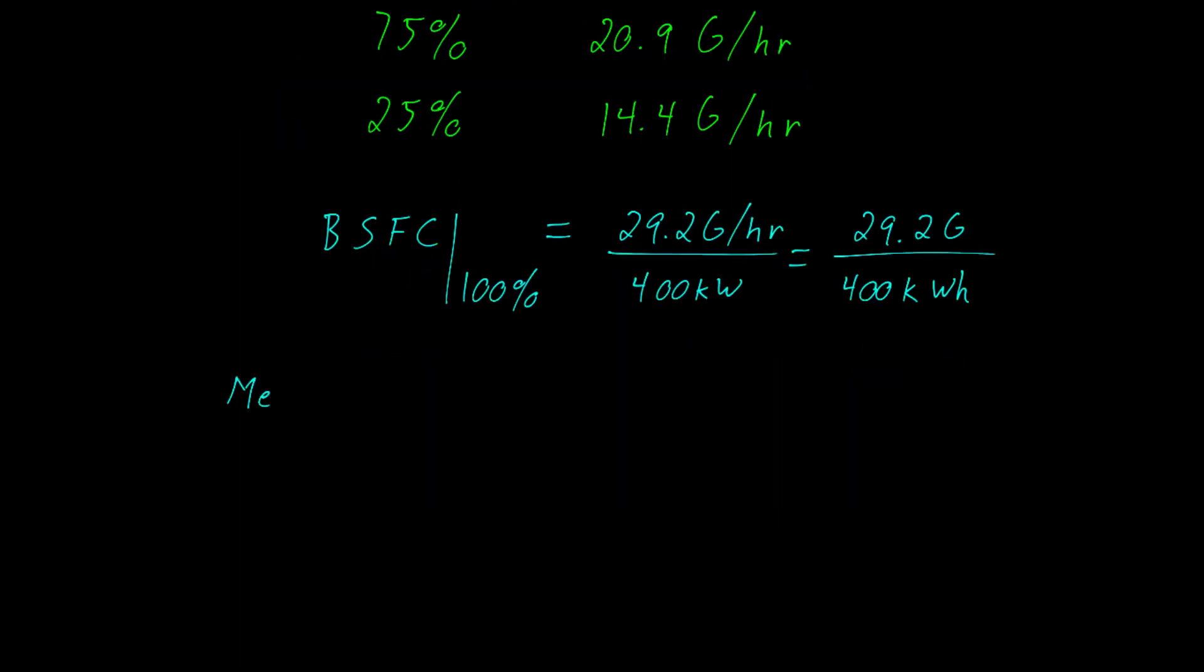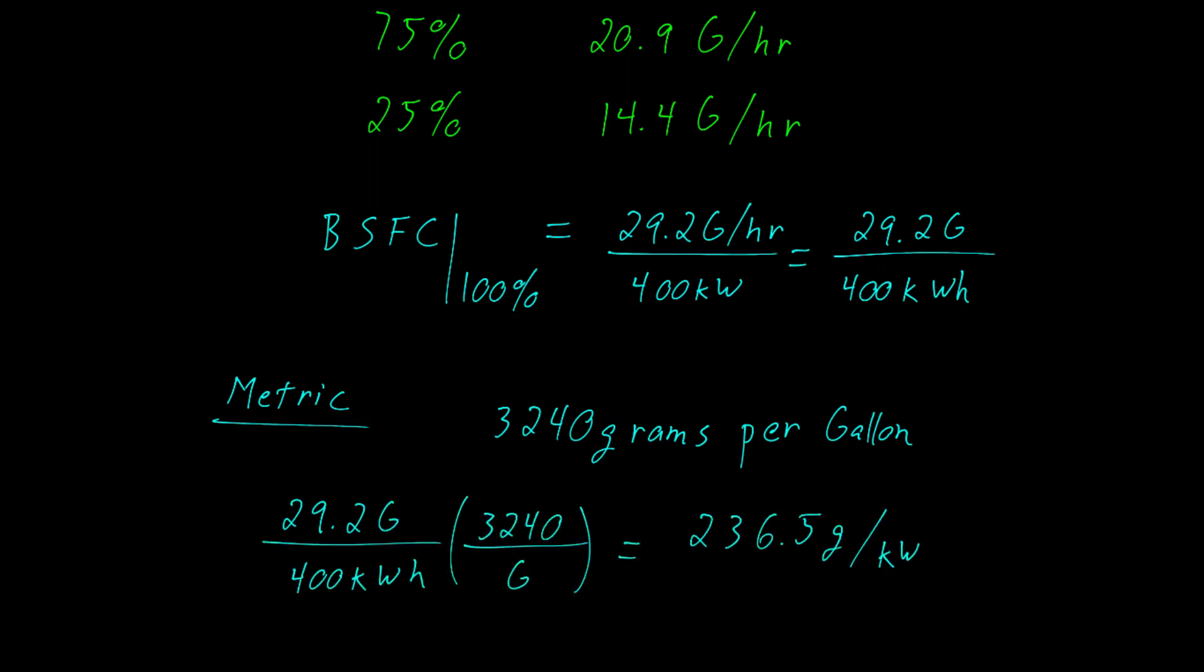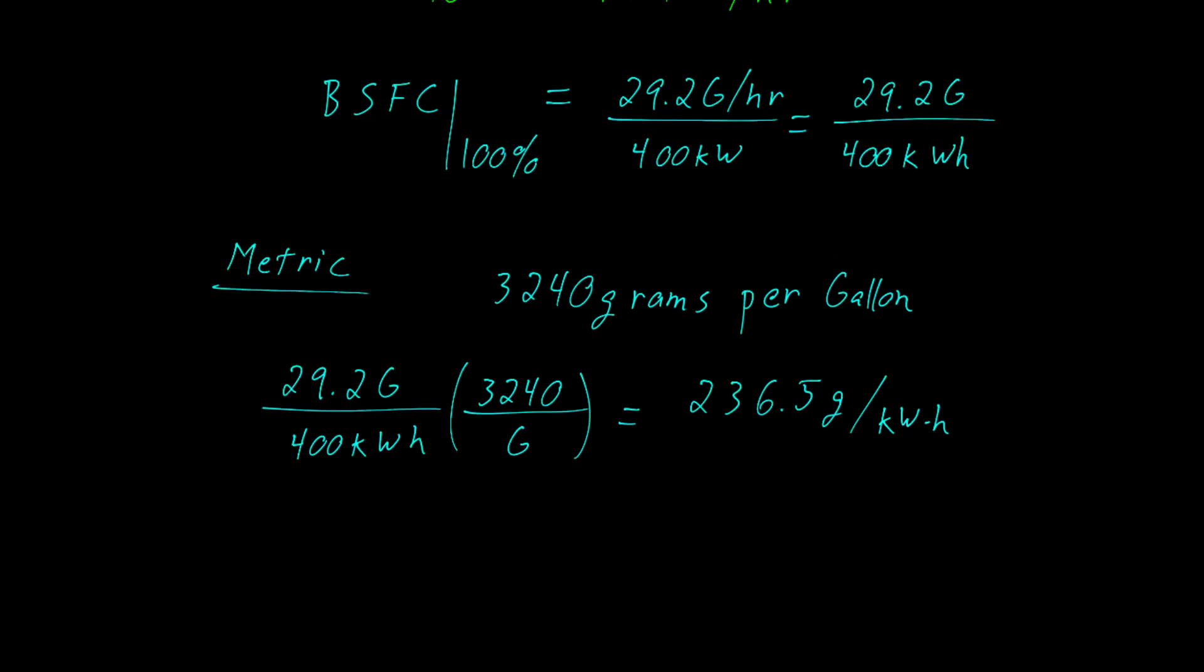Let's convert the numbers into metric. To do that, we need to know that diesel weighs about 3,240 grams per gallon. And then, using dimensional analysis, we arrive at 237 grams per kilowatt hour. Again, that's for the engine when it's under 100% load.